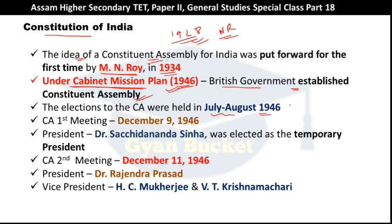The election had a total of 296 seats allotted. The Indian National Congress won 208 seats, and the Muslim League won 73 seats.